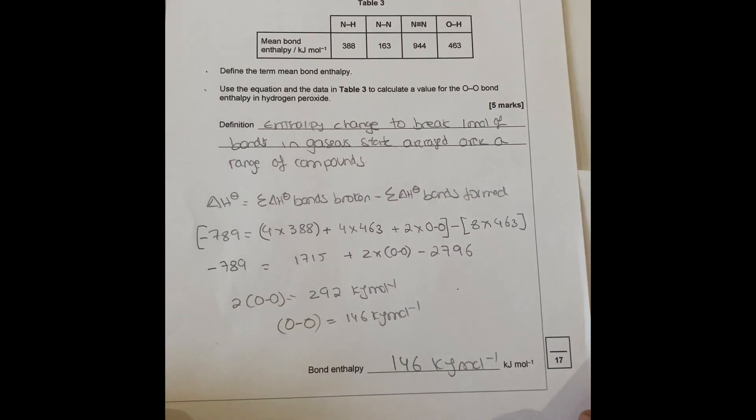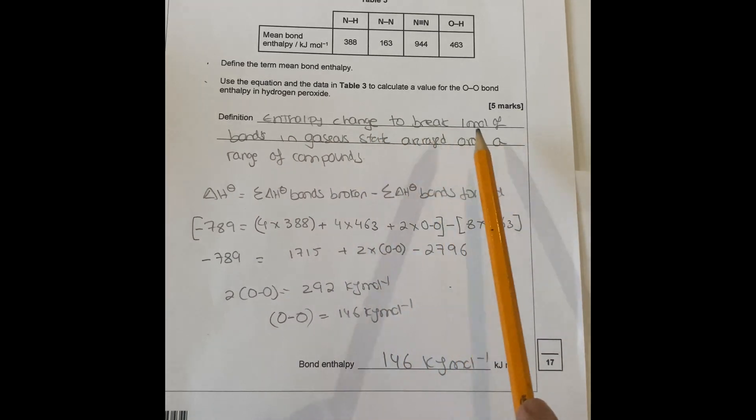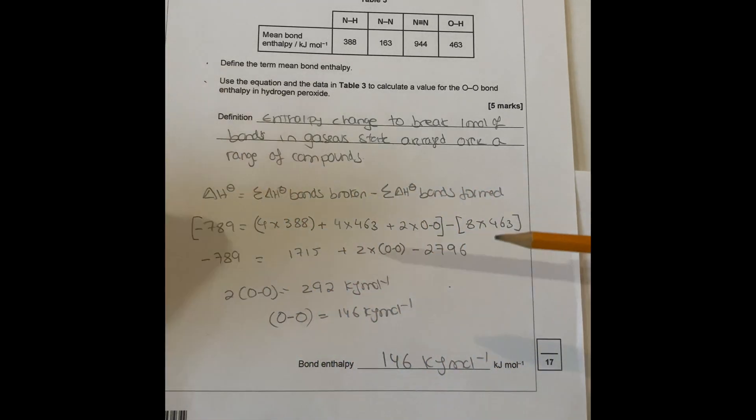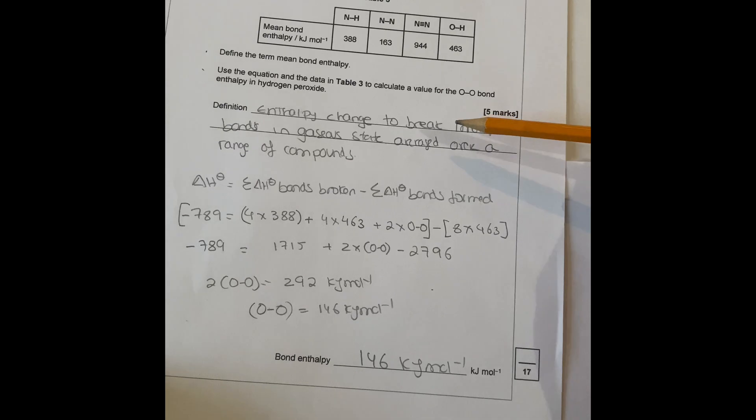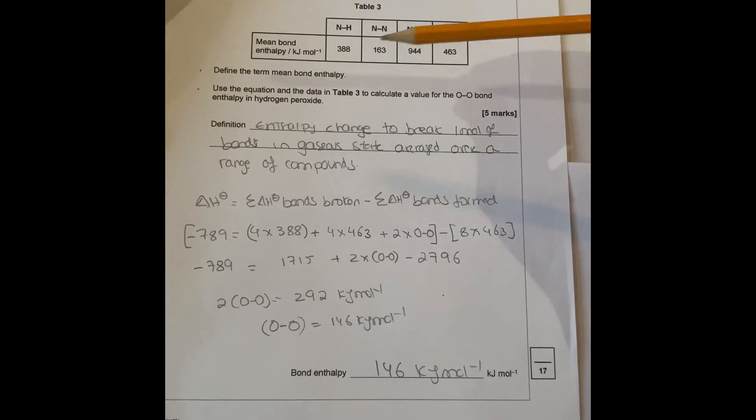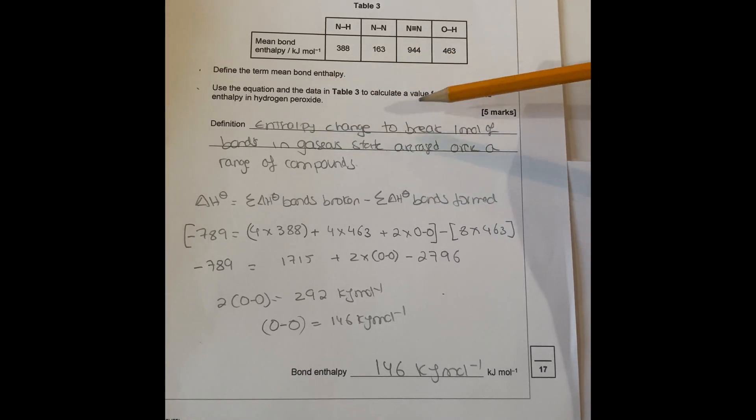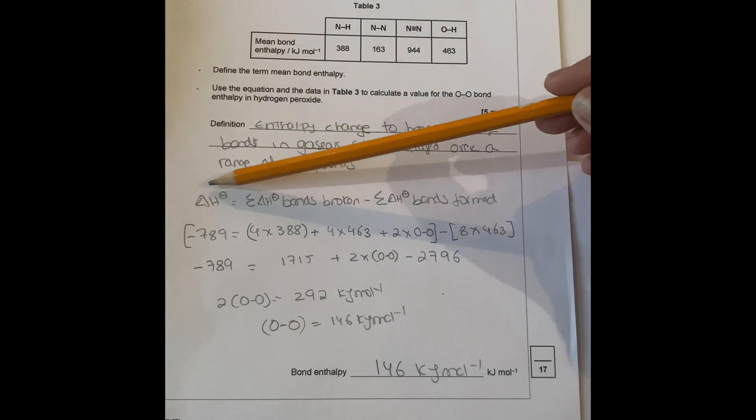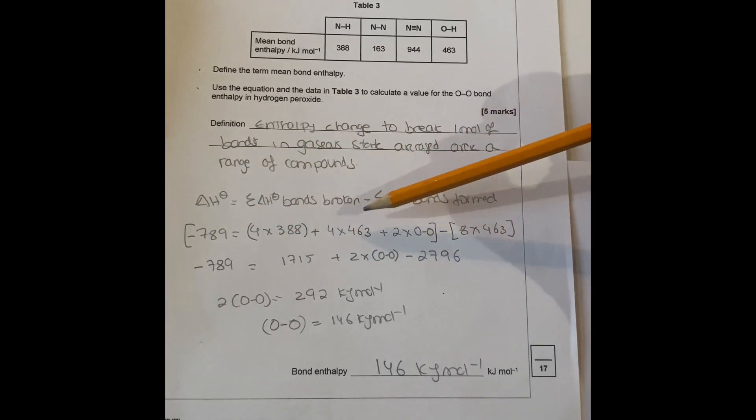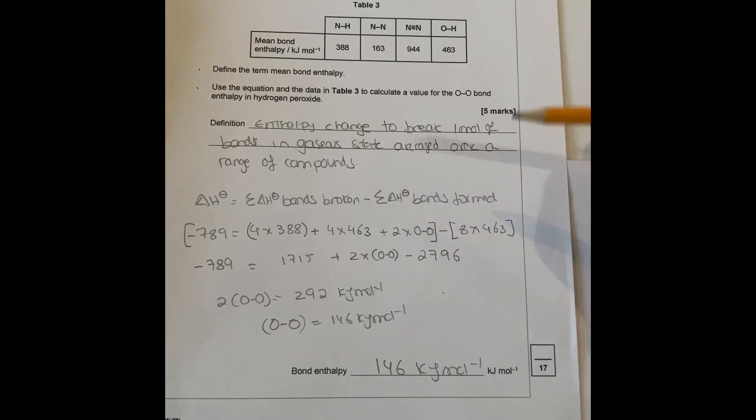Define the mean bond enthalpy. Use the equation and data to calculate the value for O-O. There's two things you need to answer for five marks. First, you need the definition: the energy change to break one mole of bonds in the gaseous state, averaged over a range of compounds. Check your book if you've got that sort of definition.